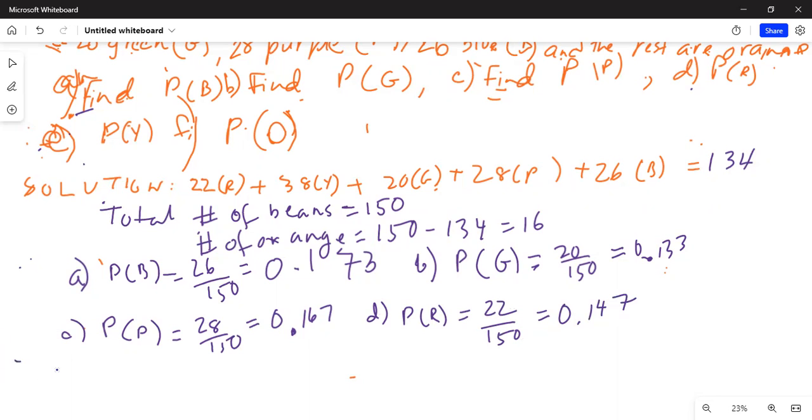Then part E, probability of yellow. How many yellows are there? 38 out of 150, and that equals 38 divided by 150, which is 0.233.